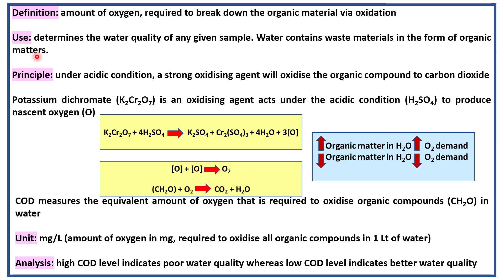If we find out how much oxygen is required to break down the organic materials, we can indirectly determine the water quality of our sample. The principle behind the COD testing method is that under acidic conditions, a strong oxidizing agent will oxidize the organic compound to carbon dioxide.